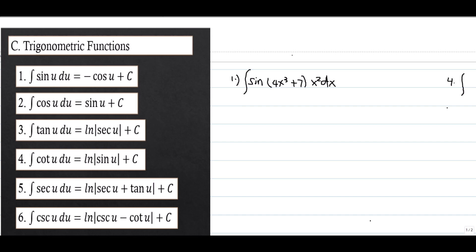The first trigonometric integral formula is: the integral of sine u du equals negative cosine u plus C. The second is: the integral of cosine u du equals sine u plus C.